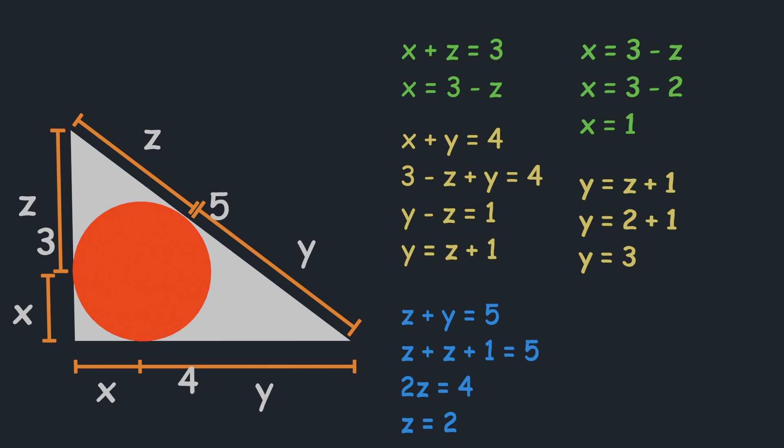Now, if we connect the center of circle to this tangent and this tangent, those will be right angle. And this quadrilateral will be a square, because its three angles are right angle, and two of its adjacent sides are equal, which radius. And because it is a square, which means radius of circle will be x, which is 1.